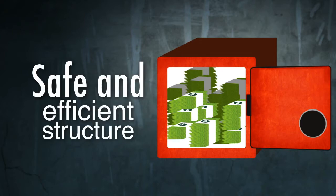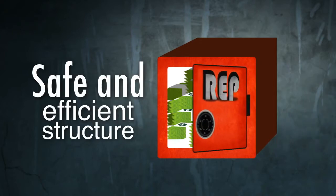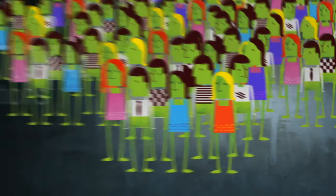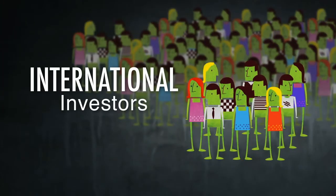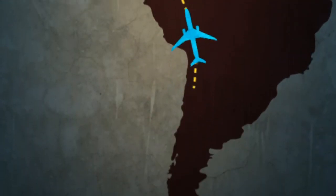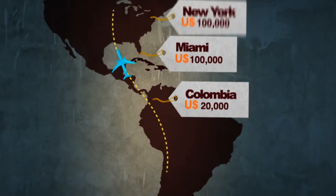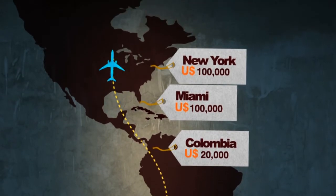A REP is a safe and efficient structure from a taxation point of view because it is designed specifically for international investors and non-citizens living outside of the United States. REPs are available from $20,000 for projects in Colombia and from $100,000 for properties in the United States.